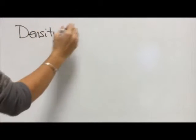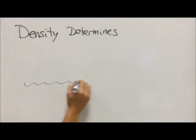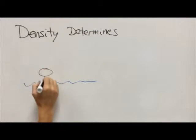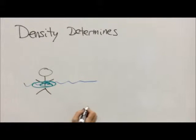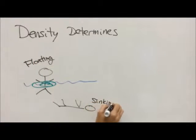In our previous video, we learned that density is a relationship between mass and volume that ultimately determines whether things are going to float or sink.